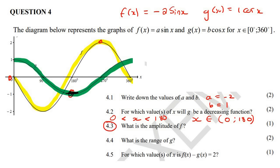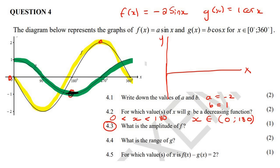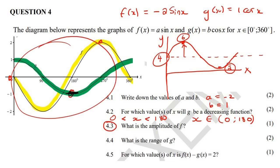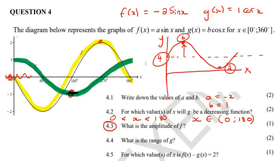This question says what is the amplitude of F, the yellow graph. Amplitude: let's say you have a graph where the y value at the top is six and the y value at the bottom is two. To work out amplitude, you find the middle position — halfway between six and two, which is four. Your amplitude is the distance from the middle position to the top, so from four to six, giving an amplitude of two. For graph F, the middle position is the x-axis, and the graph goes from zero up to two, so the amplitude is two.